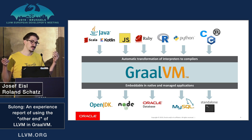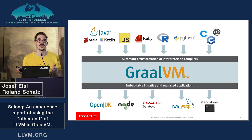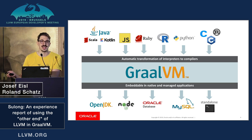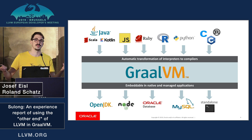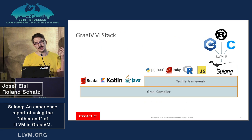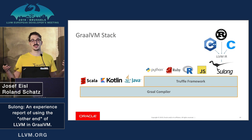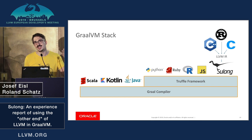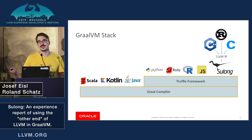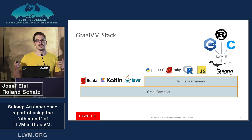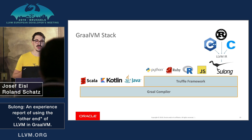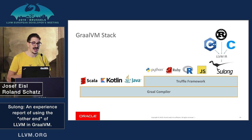One interesting feature of GraalVM is that it can be targeted to many different deployment targets — you can run it on a JDK, embed it in Node.js, in a database, or run it as a standalone language runtime. The core technology in the GraalVM stack is the Graal compiler, originally a compiler from Java bytecode to machine code. On top of that we added the Truffle language implementation framework, which allows you to implement your language as easily as possible and get very high performance because it uses Graal to compile to machine code.